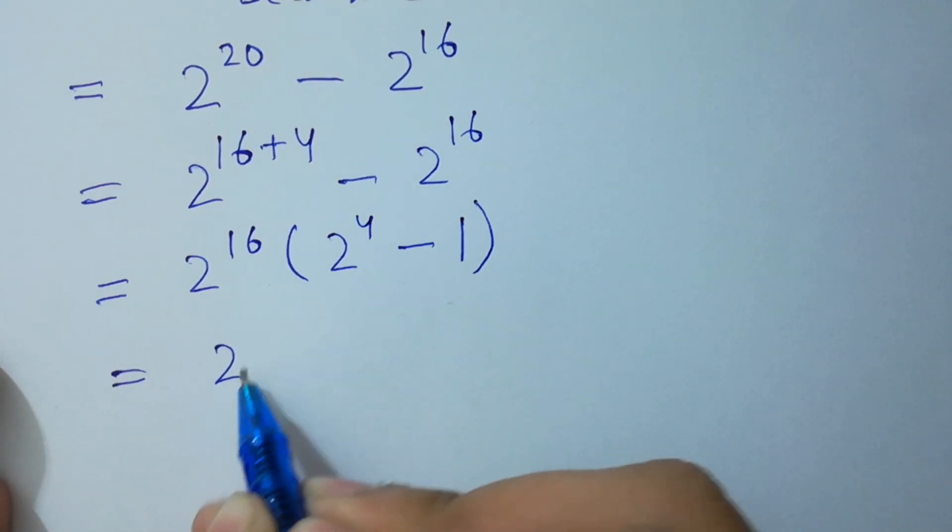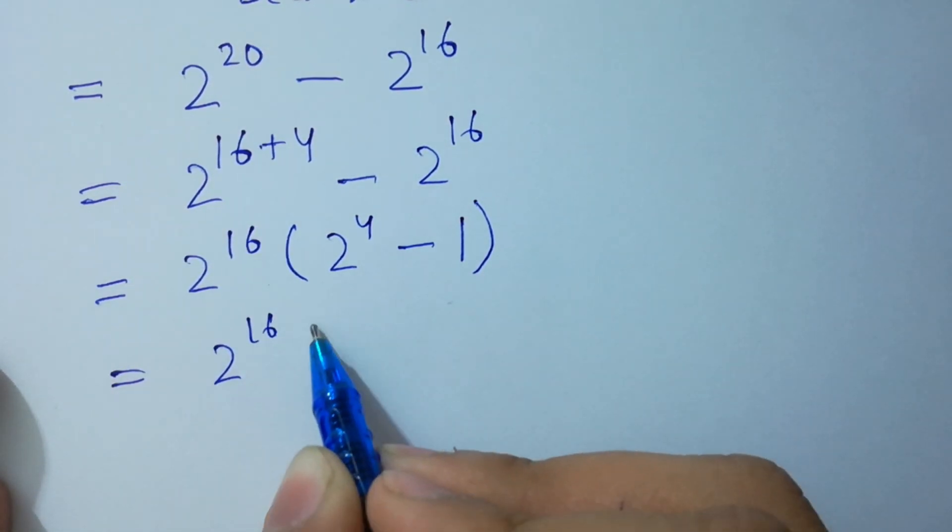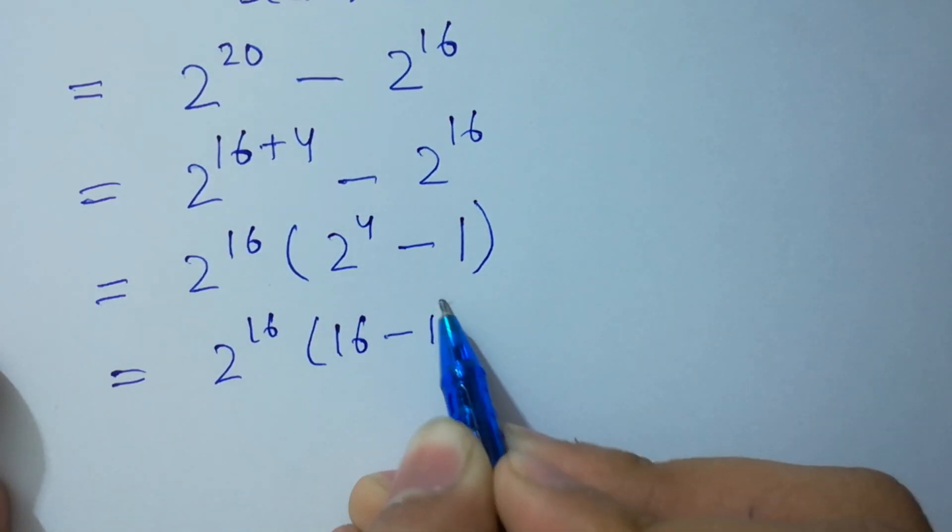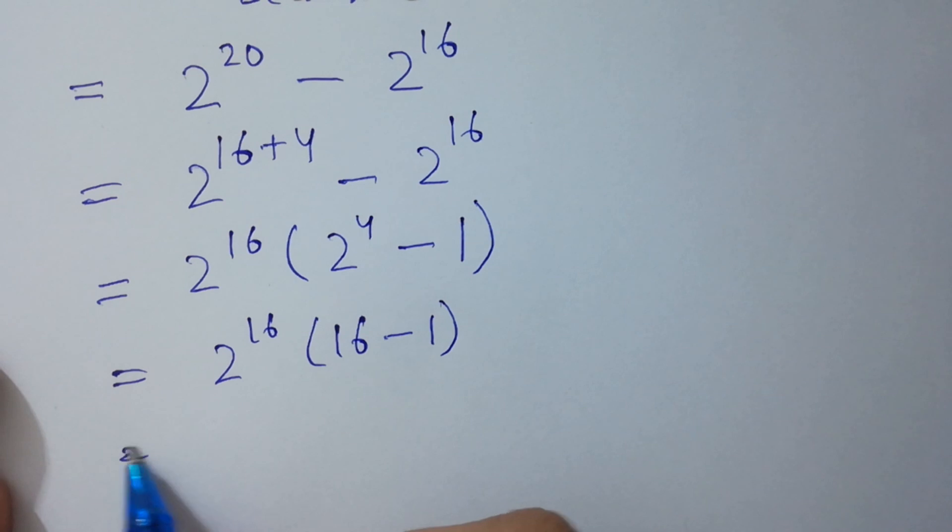Next step: 2 to the power 16 times 2 to the power 4 equals 16 minus 1. 16 minus 1 equals 15. Very easy.